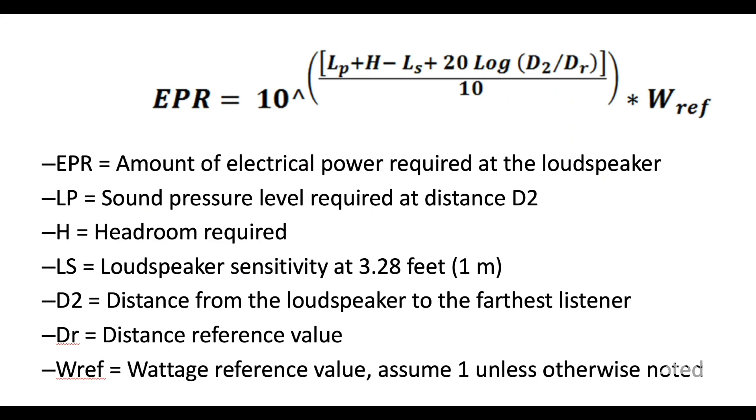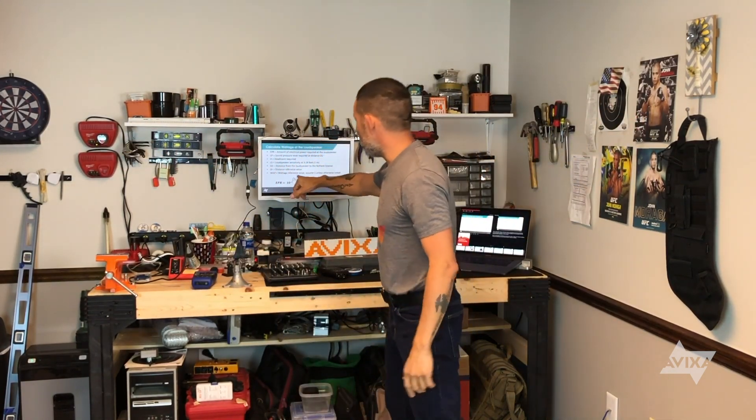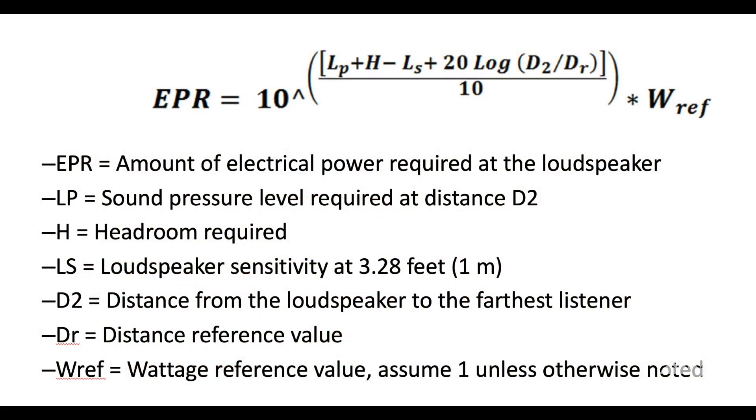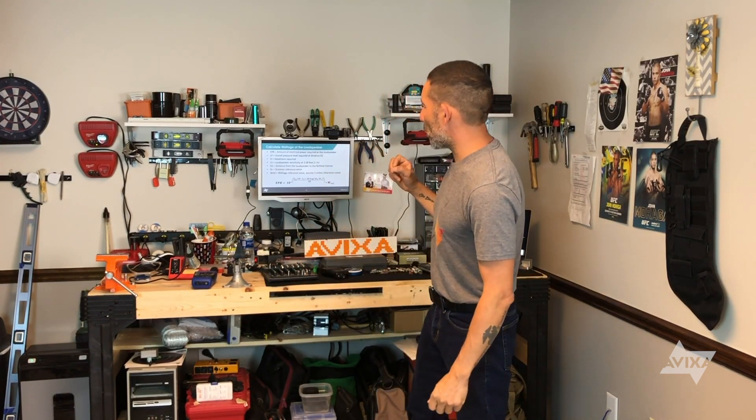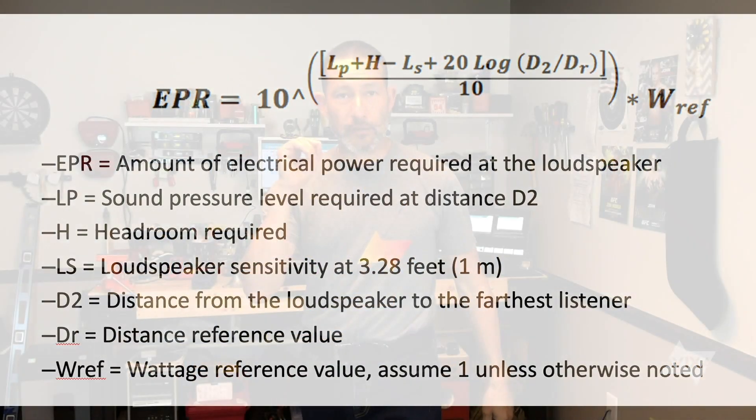Next is D2 — the distance from the loudspeaker to the furthest listener. So my loudspeaker is mounted in the ceiling; that loudspeaker down to my ear hole level, whether seated or standing, that is D2. If you're in an environment where you have a loudspeaker mounted on the wall aiming to an audience area, I would take D2 from my wall loudspeaker all the way to the back row. Then DR — the distance reference value. Remember when we looked at that loudspeaker sensitivity, that reference value is 3.28 feet or one meter. And the wattage reference: one watt, taken off that loudspeaker sensitivity.